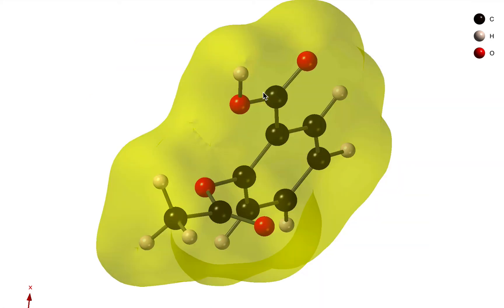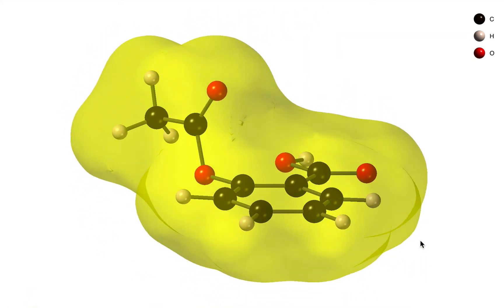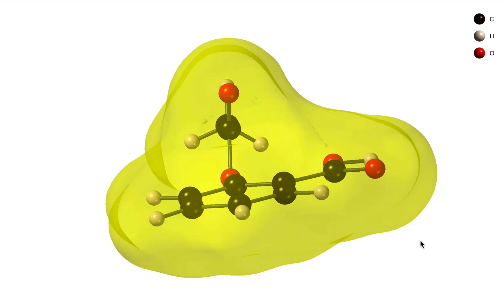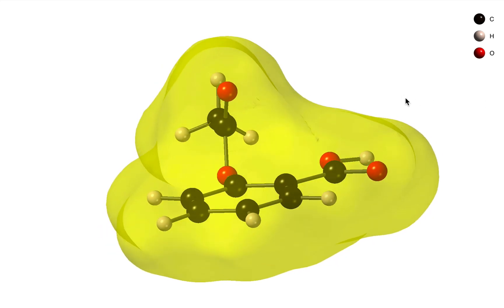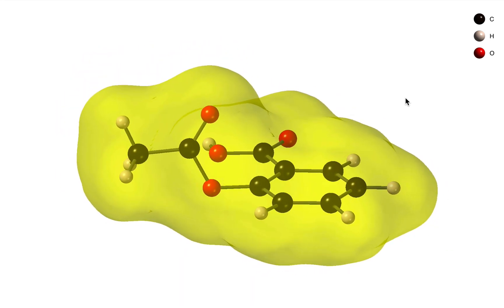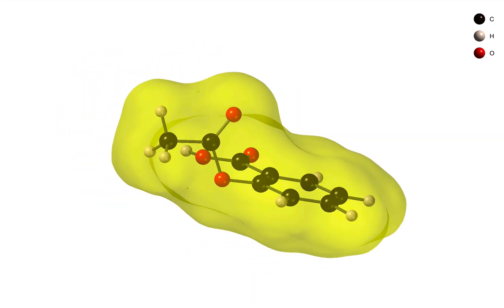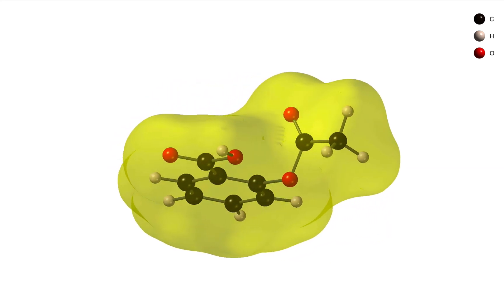Now we have a single molecule with the surface around it. If we need to, we can change the color and other properties of that surface. This gives us a nice combination that indicates the bonding within the molecule but also the overall shape of the molecule.